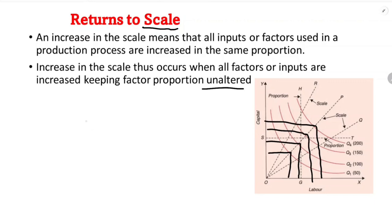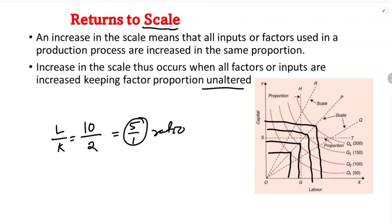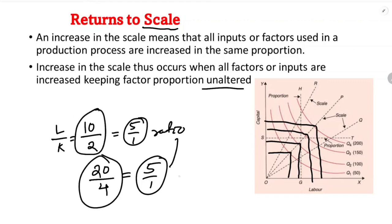For example, suppose labor and capital: the ratio L by K is 10 by 2, which gives a ratio of 5 by 1. The ratio remains unaltered — the factor proportion remains constant. Then we can say there is return to scale. If the factor proportion is constant, we can say there is increase in scale.